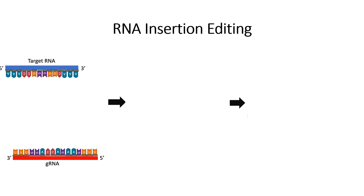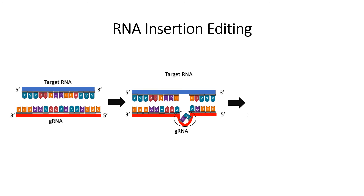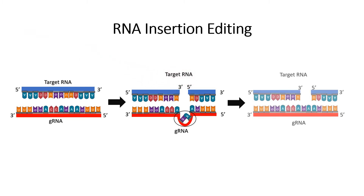Let us look at RNA insertion editing in detail. We have a guide RNA and a target RNA that share some homology, particularly on the flanks of the transcripts, but have regions of non-homologous sequences in the middle. When the homologous sequences bind to one another, it forms a bubble in the region with a mismatch, as can be seen here. Next, an endonuclease comes in to nick the target RNA, which then allows a TUTase to come in and extend the three-prime end of the five-prime cleavage product with uridine residues as dictated by the guide RNA.